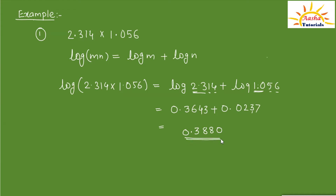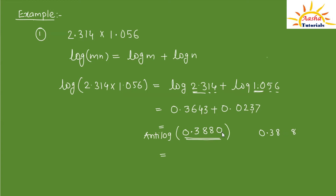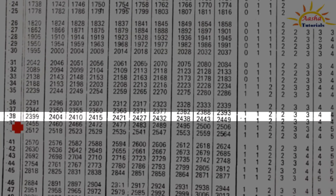This is not the final answer — we got this by adding the logs. To find the answer we have to take the antilogarithm. We find the antilog of the first two digits after the decimal point: antilog of 0.38 in the 8th column. Since the last digit is 0, we don't need the mean difference. In the 8th column at row 0.38, the value is 2443.